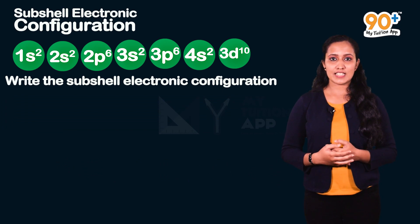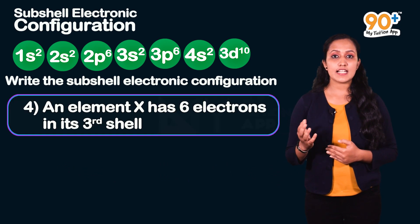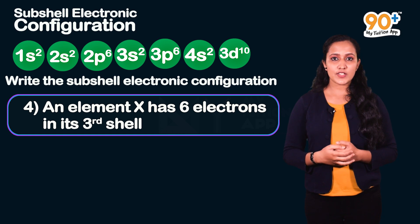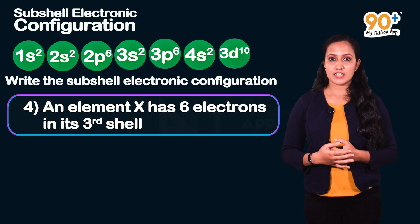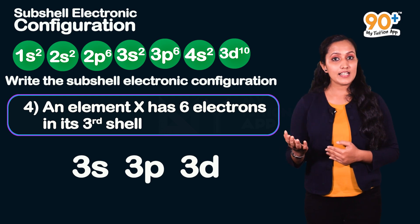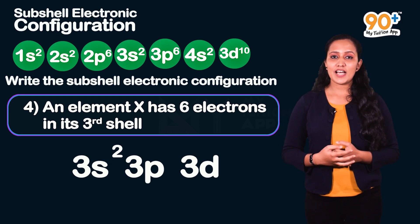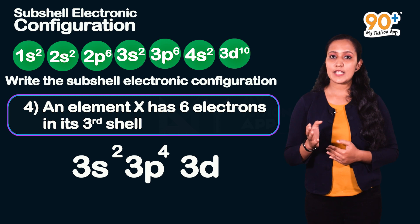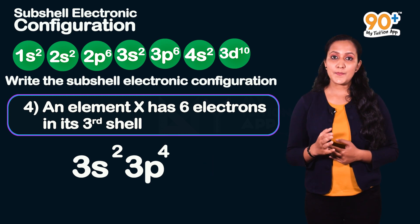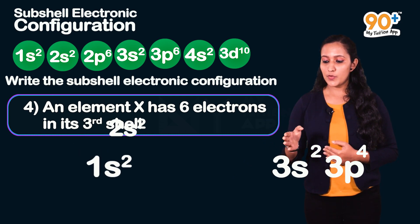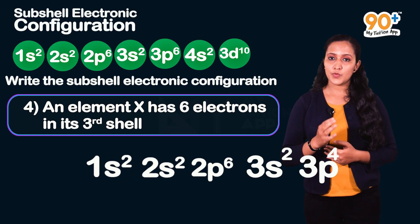Fourth question: Element X has 6 electrons in its third shell. The third shell (M shell) has subshells 3s, 3p, and 3d. Of the 6 electrons, 2 fill 3s and the remaining 4 fill 3p, giving 3s², 3p⁴. The complete configuration is: 1s², 2s², 2p⁶, 3s², 3p⁴.